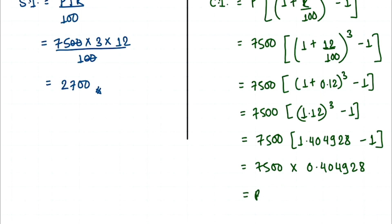When you multiply these two numbers, you finally get an answer which is 3036.96. So this is our compound interest.